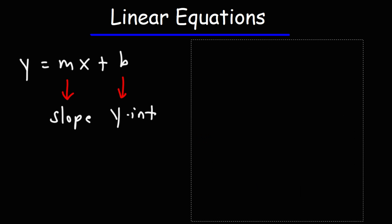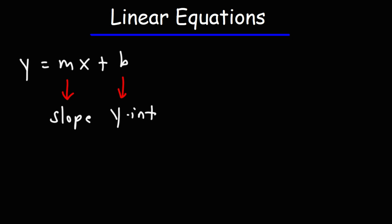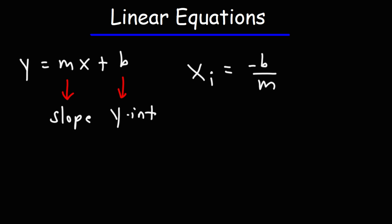For those of you who want more examples, I'm going to be posting a few links in the description section below so you can see how to use some of these formulas. For this equation, if you want to calculate the x-intercept — I'm going to call it xi — the x-intercept is going to be negative b over m. If you set y equal to 0 and solve for x, you're going to get negative b over m.